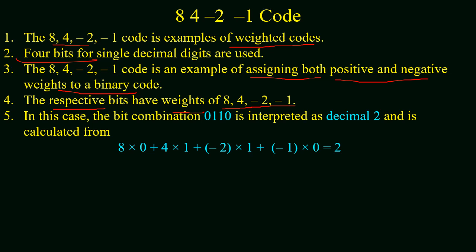Now if we have a bit combination of 0110 in 84-2-1, its decimal equivalent will be calculated as follows: 8×0 + 4×1 + (-2)×1 + (-1)×0. Adding up will give a value of 2. So the decimal digit 2 has an 84-2-1 code of 0110.